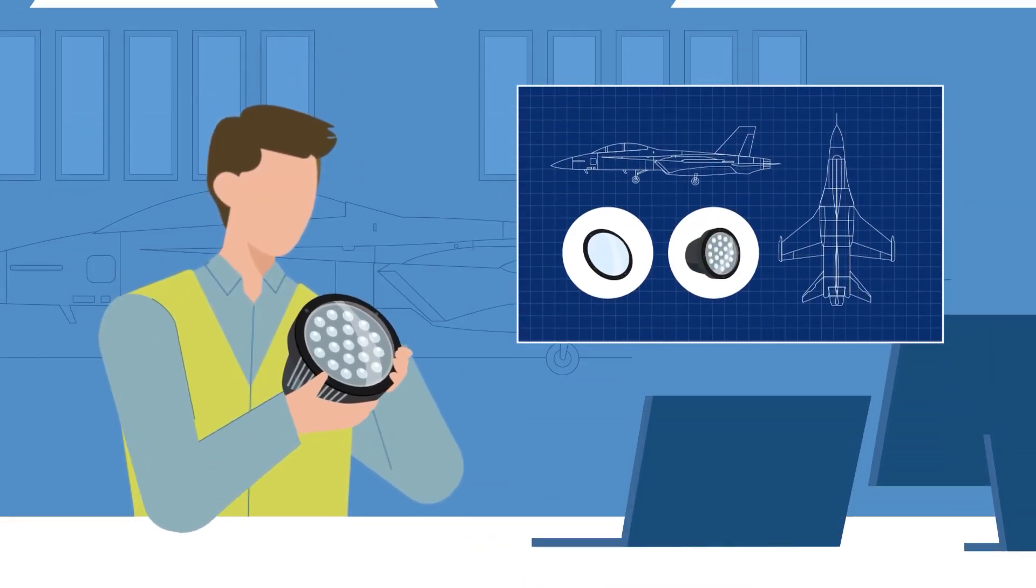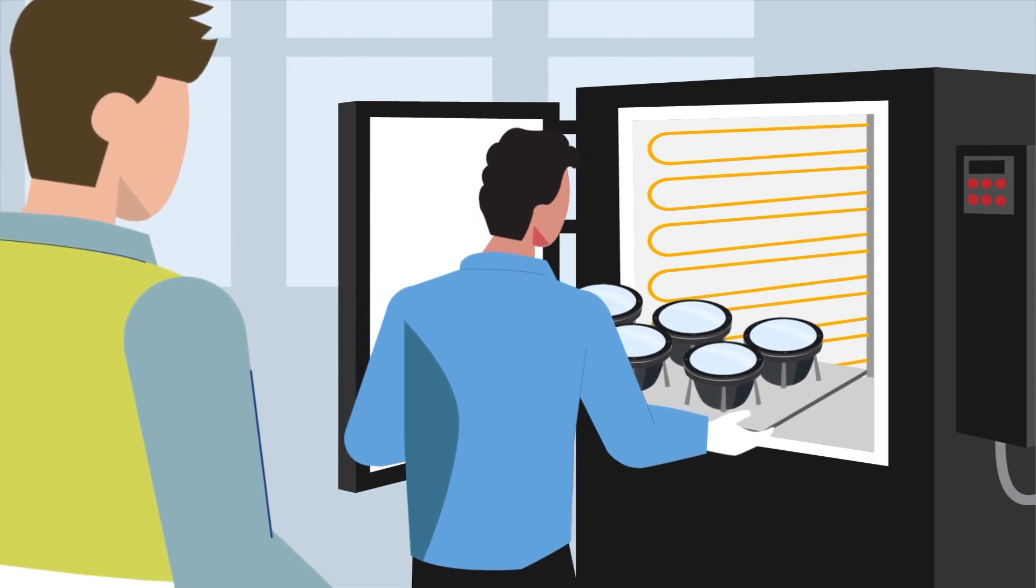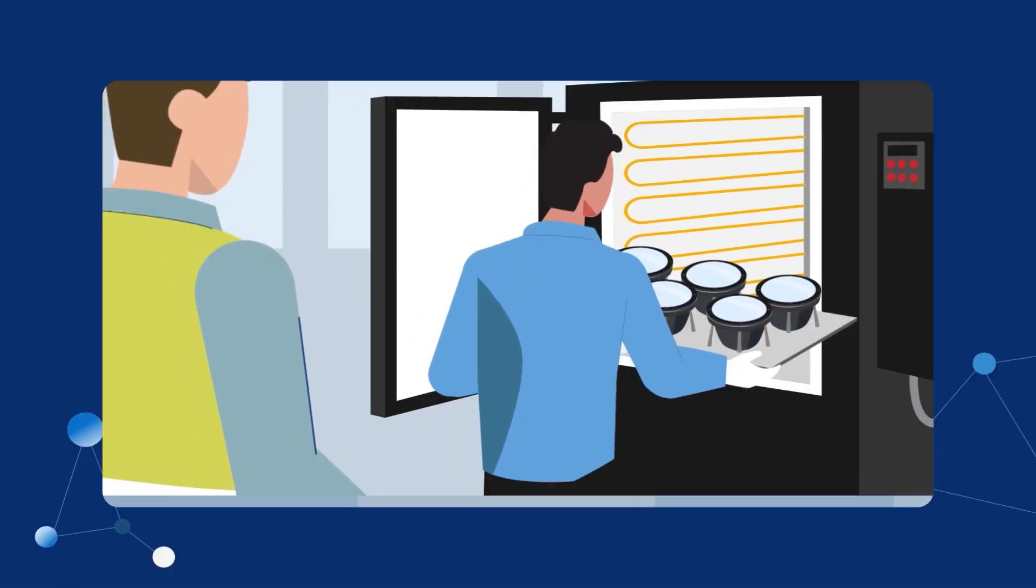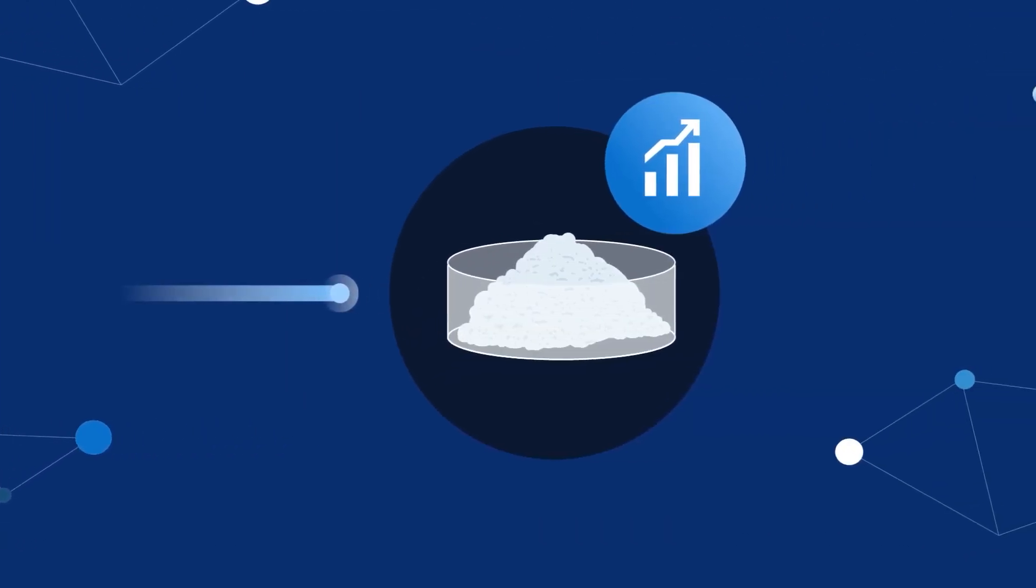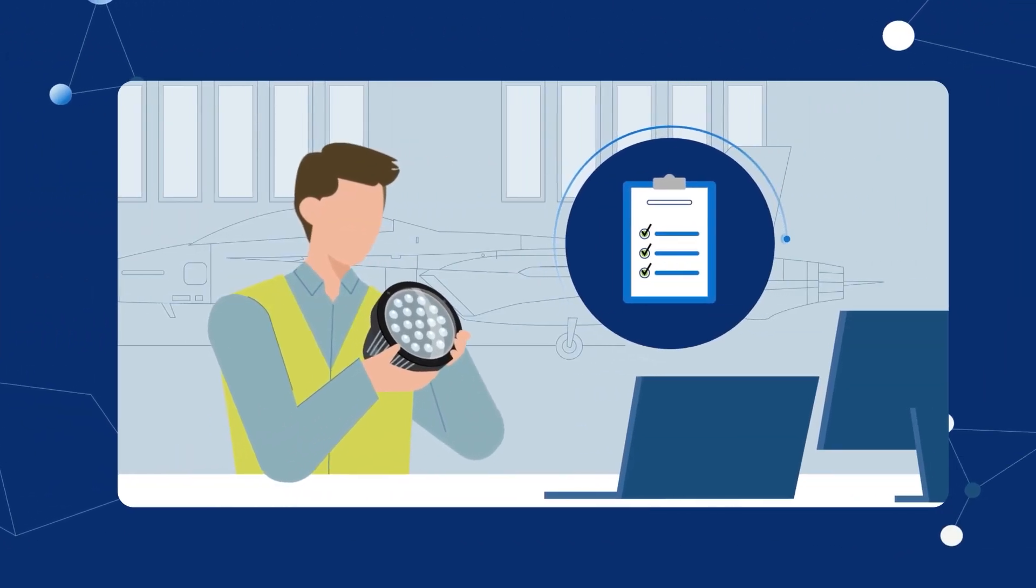After successful prototyping, Ken is ready to scale up production of his components. The engineering team at MOSAI then develops the necessary processes to ramp up manufacturing of the custom glass to meet Ken's production demands.